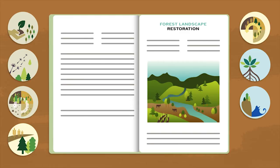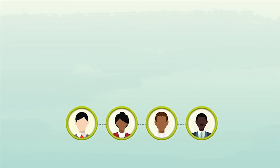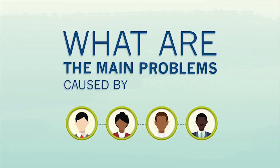The process begins when an institution or community that manages land decides they might want to restore a portion of it. They will ask the question, what are the main problems caused by degradation? And they will try to identify the goals of successful intervention.